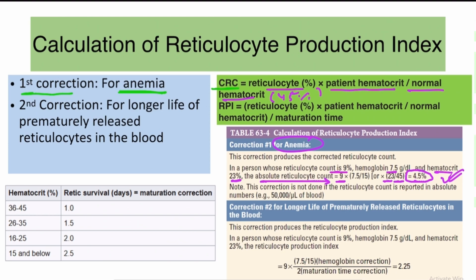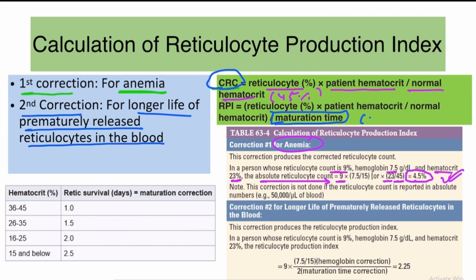For the second correction, we account for the longer survival of prematurely released reticulocytes in the blood by dividing by the maturation time. The formula for reticulocyte production index (RPI) is: corrected reticulocyte count ÷ maturation time, or equivalently: (reticulocyte percent × patient hematocrit ÷ normal hematocrit) ÷ maturation time.